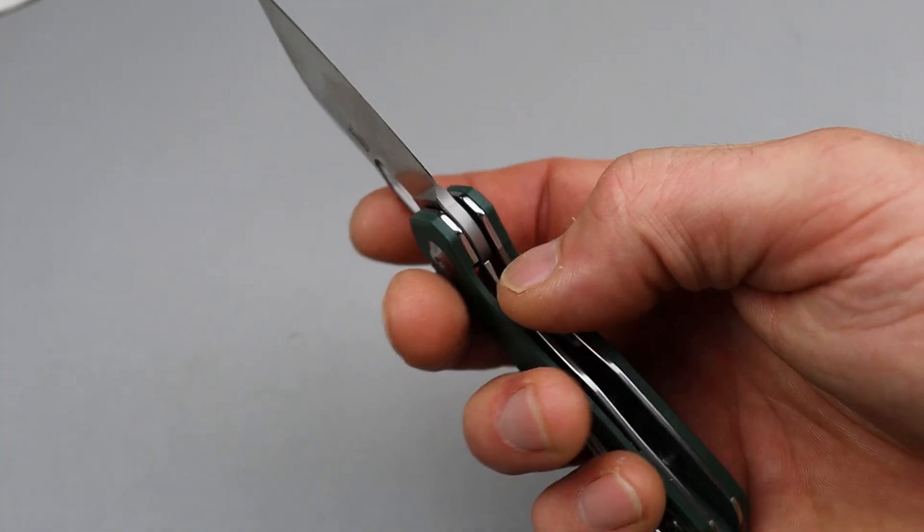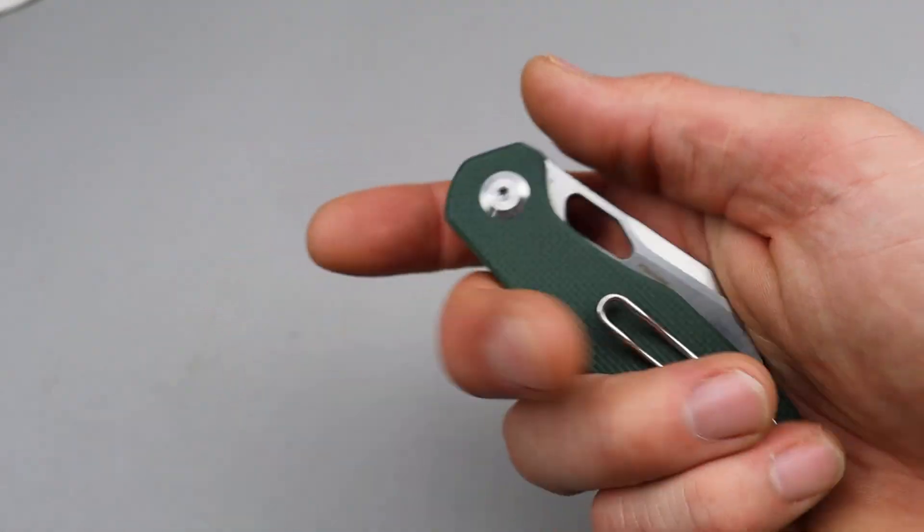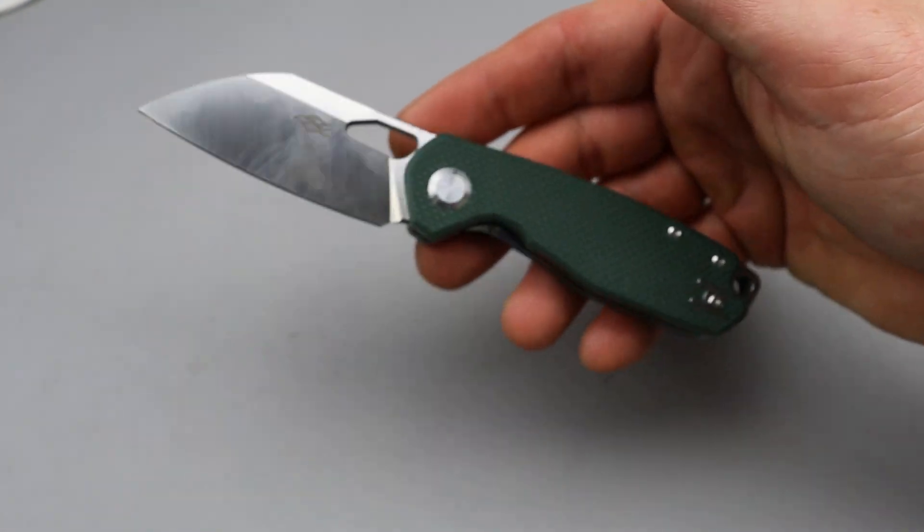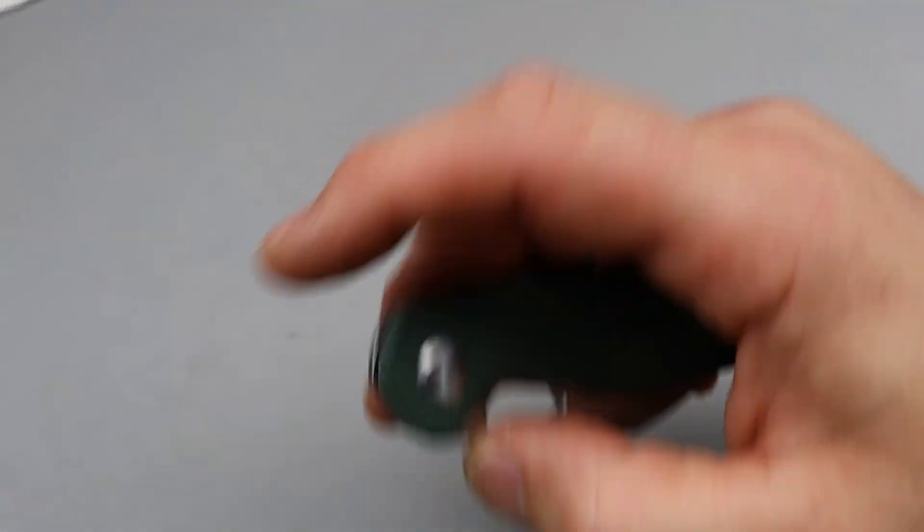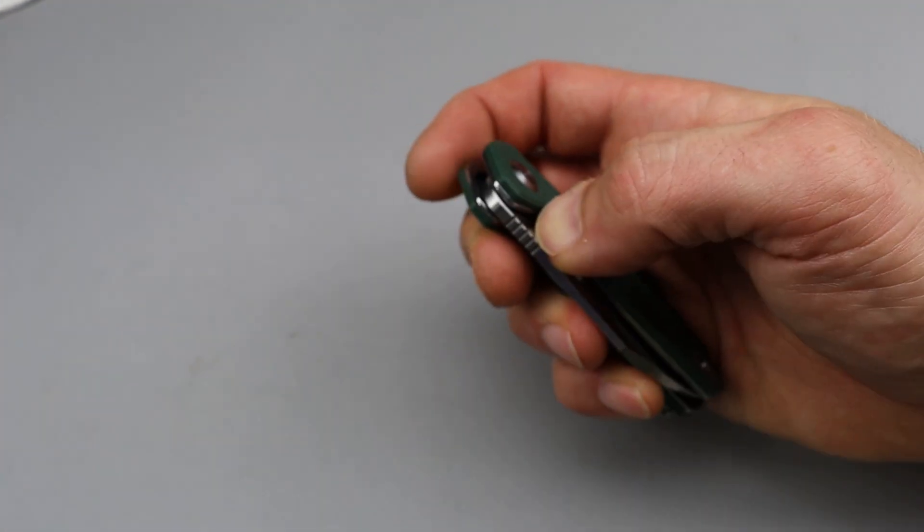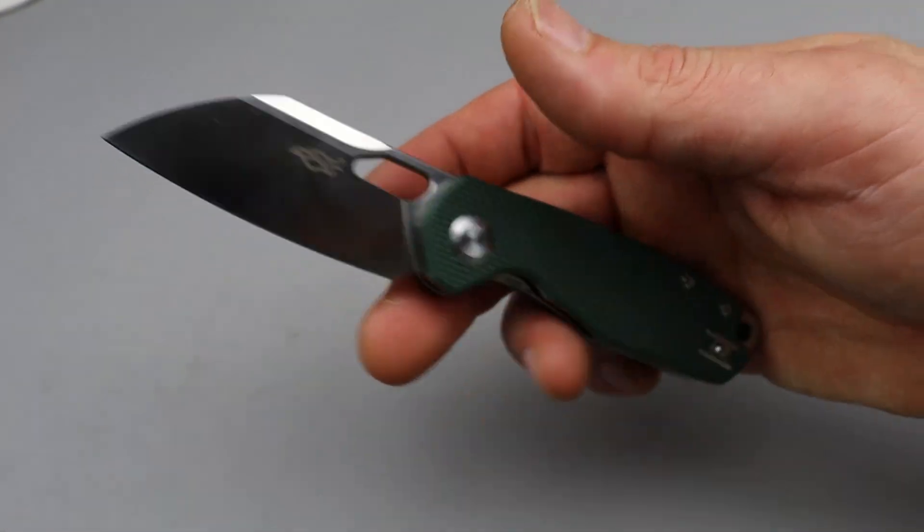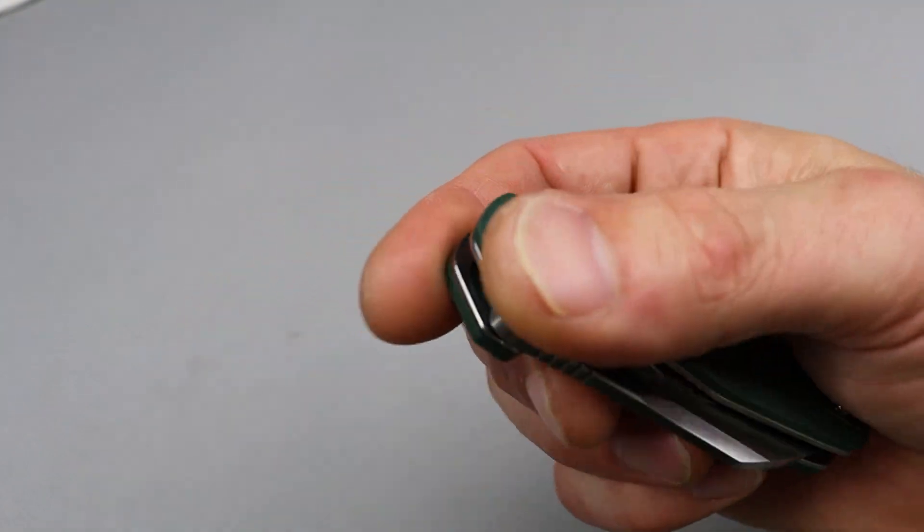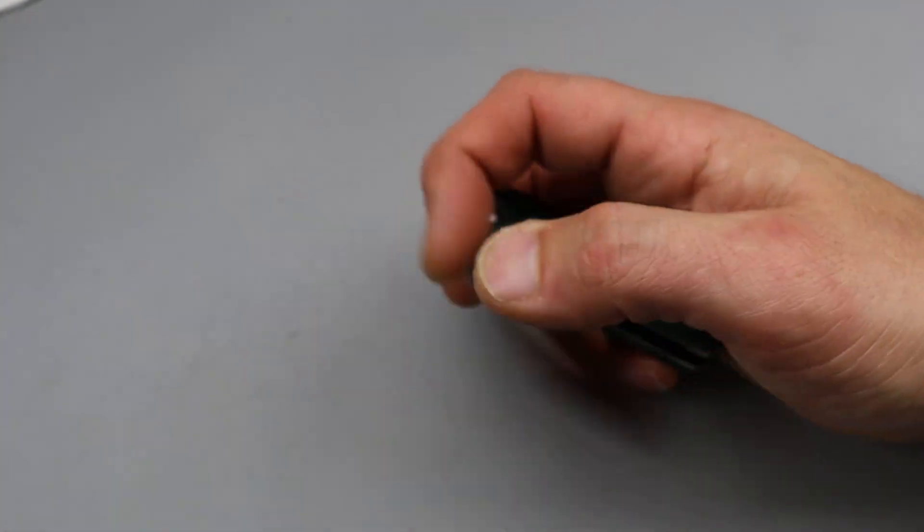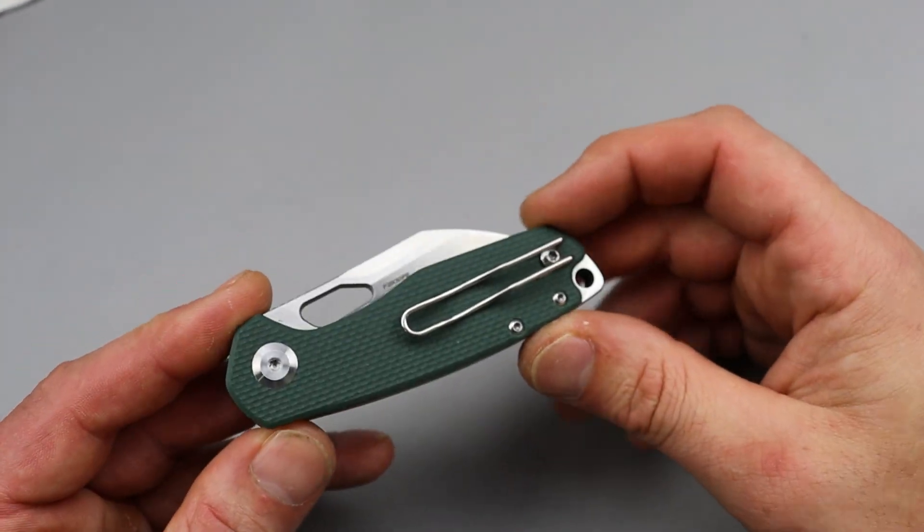So you really can't go wrong with this type of price for what you're getting, especially when you see the little details. Because there's knives that are priced around the same price as this, but you can see the little details aren't there. They cut corners and stuff. And these seem like they don't cut any corners.